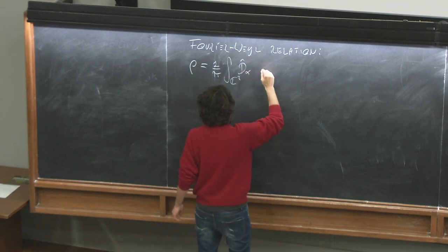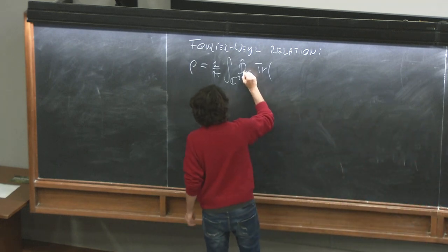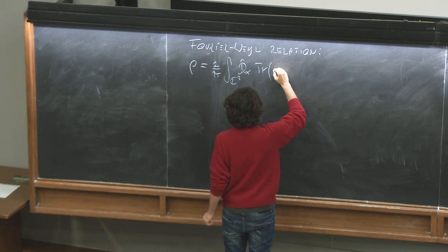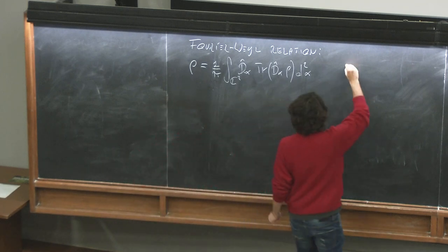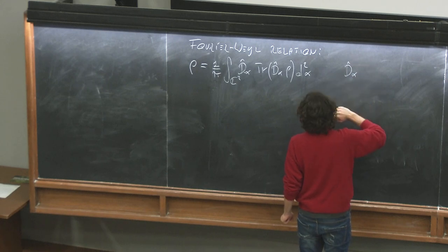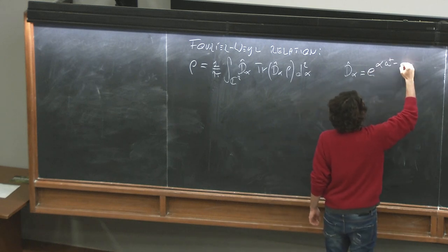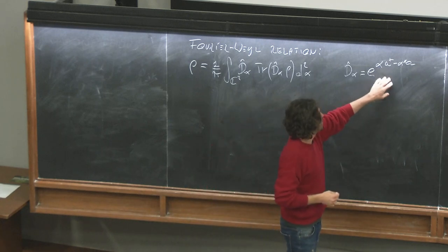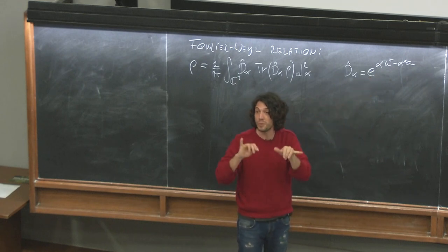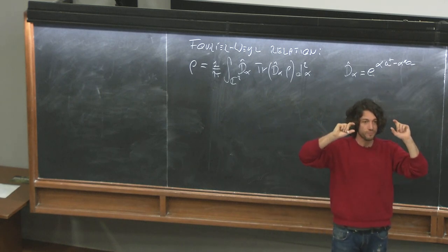The integral is over d²α, with a 1/π normalization in this convention, and D(α) is the displacement operator written in terms of complex variables with ladder operators. This is the same as what we wrote before with X and P and the omega matrix — this product corresponds to coupling X and P through the omega metric. Here α = (X + iP)/√2, and A† and A are the ladder operators.